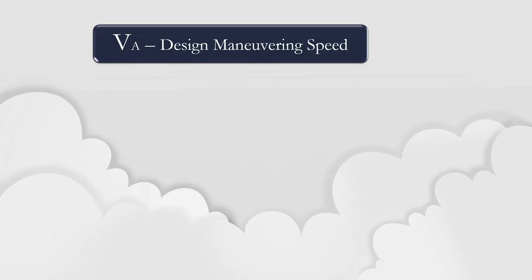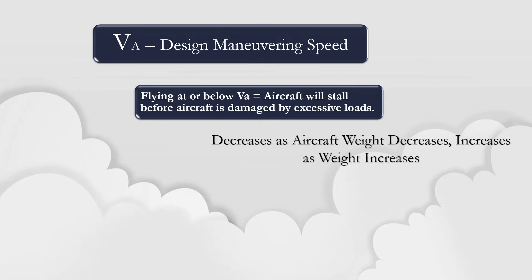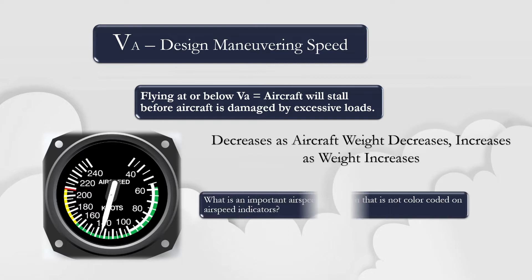Maneuvering speed is symbolized by the letters VA. When flying at or below the design maneuvering speed, an aircraft will stall before it is damaged by excessive loads. It is important for pilots to remember to be cautious if flying over the maneuvering speed, because any factor that suddenly increases the load factor on the airplane — such as a significant wind gust — could cause structural failure when flying above the maneuvering speed of the aircraft.